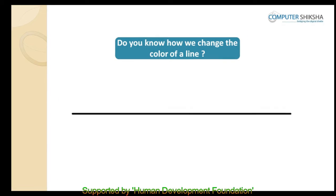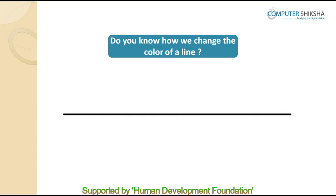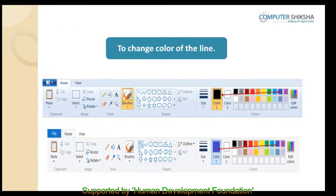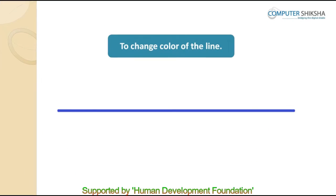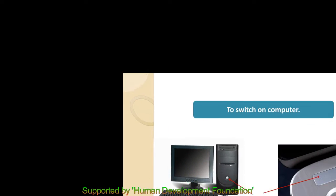Do you know how we change the color of the line? The color of the line can be changed by first selecting the color that you want to apply on the line. But before applying it, it must be selected from color box 1, and then choose the color and draw with it.